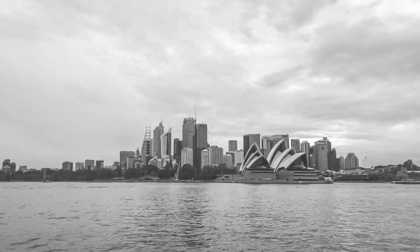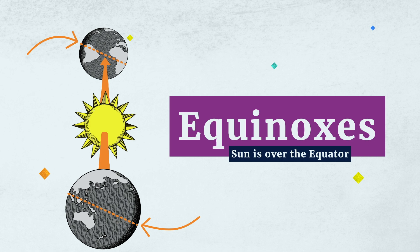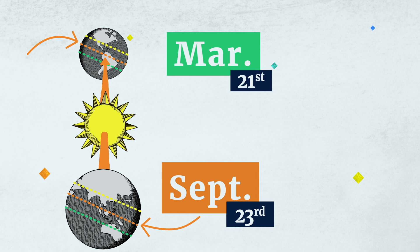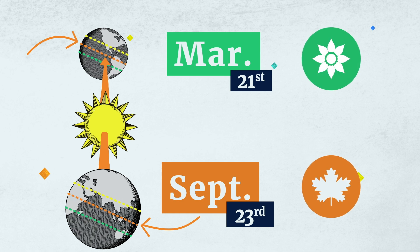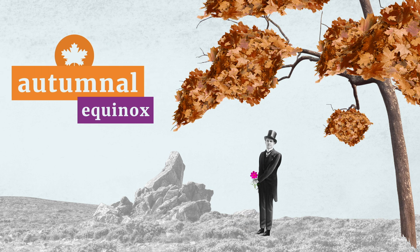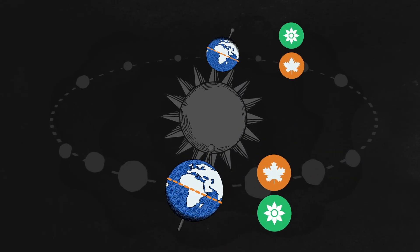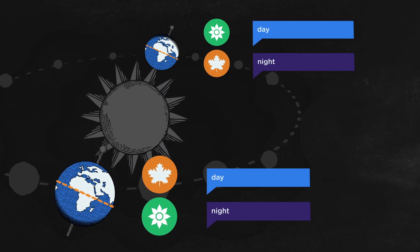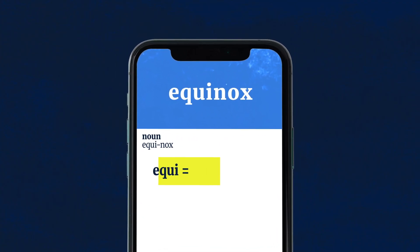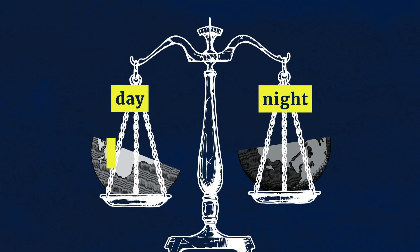So what about equinoxes? The equinoxes are when the Sun is right over the equator, in between the two tropics. They occur around March 21st and September 23rd and mark the beginning of spring or autumn. We call the beginning of spring the vernal equinox, while the beginning of autumn is, conveniently, the autumnal equinox. Again, which is which depends on the hemisphere, but during both equinoxes, day and night last the same amount of time. Here's a handy mnemonic device: equi means equal, and nox means night, which tells you that the day and the night are of equal length.